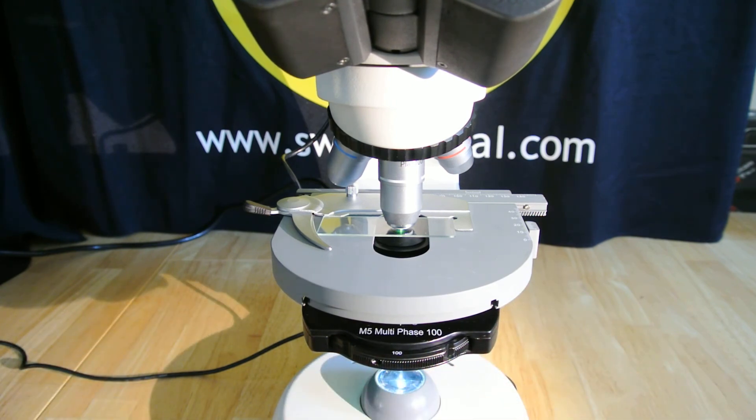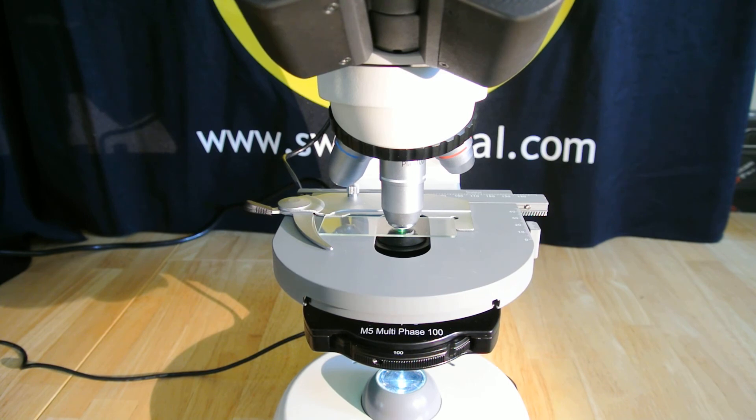Please note the models that have LED illumination, an additional swing-out filter carrier is provided. LED illumination provides a very white light that needs to be softened with a neutral diffusing filter when using the 10x objective. Place the neutral filter in the secondary filter carrier.